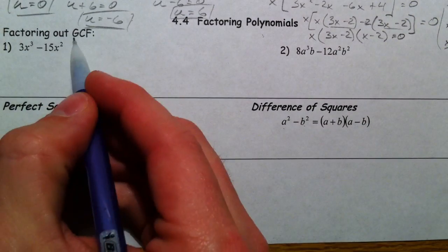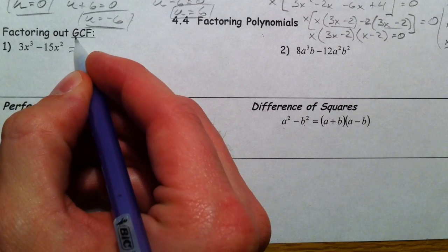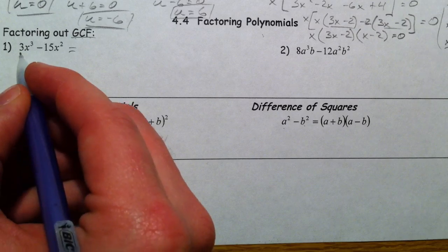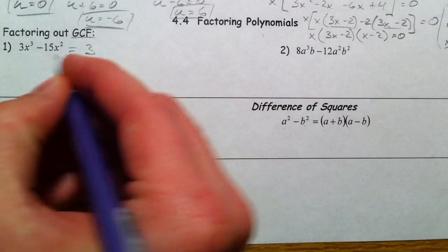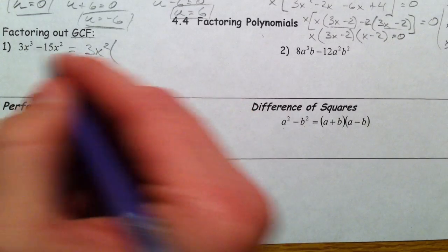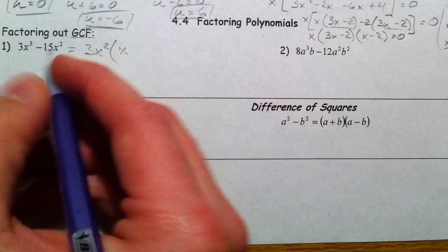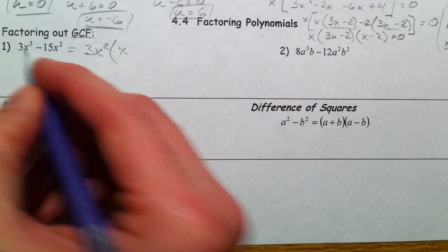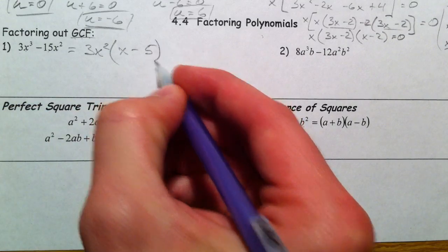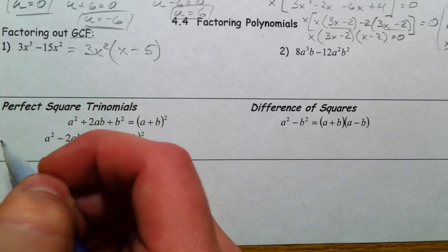Let's continue with some factoring. The very first kind of factoring you ever did was factoring out the greatest common factor, the GCF. For example, 15 and 3 have 3 in common, and the x's have x² in common, so we pull that out and divide it out. That leaves x, and 15 divided by 3 is 5, and the x² is gone. Make sure that if you multiply this back in, you get what you started with.